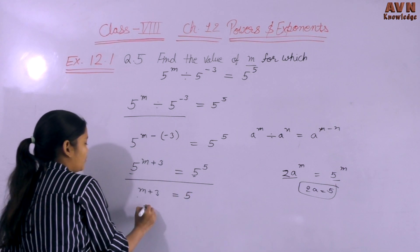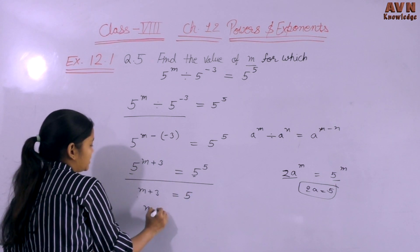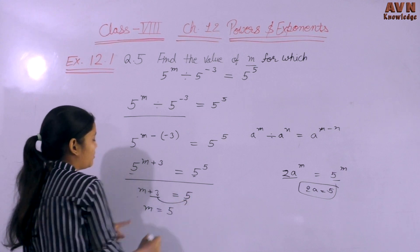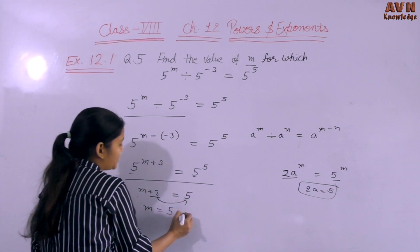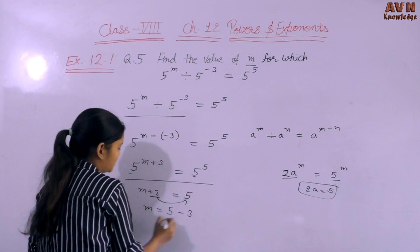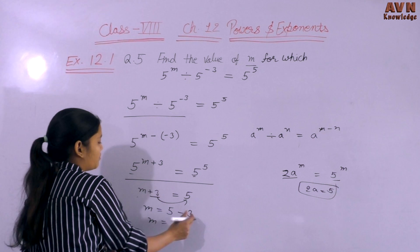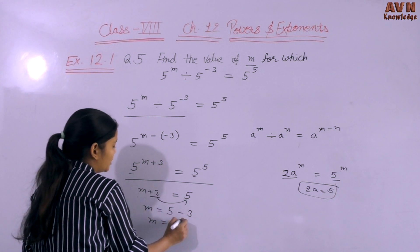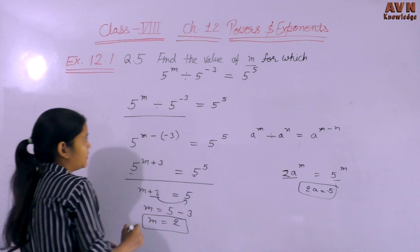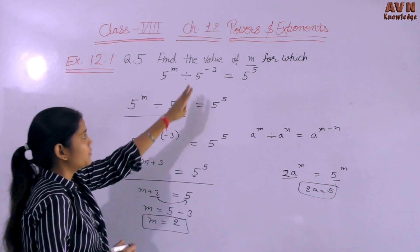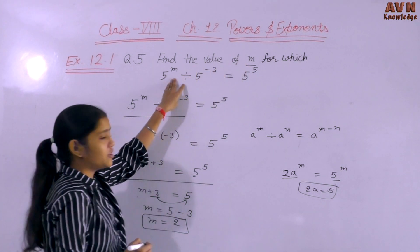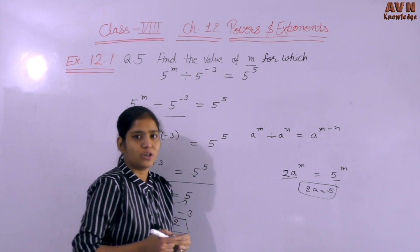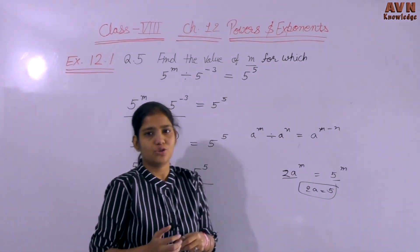Now we find the value of M. M plus 3 equals 5. The plus 3 shifts to the other side as minus 3. So M equals 5 minus 3, which is 2. The value of M, which was the variable we needed to find, is 2. Now come to the next question.